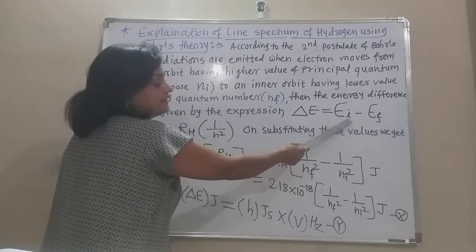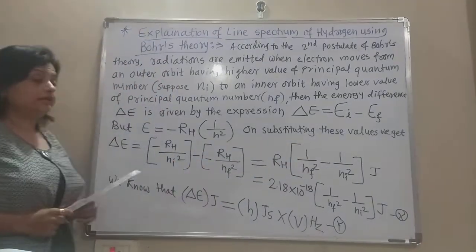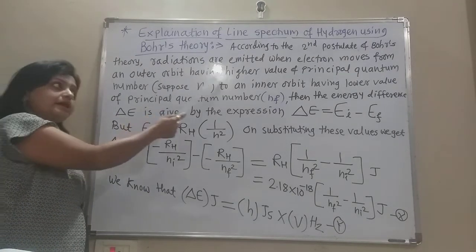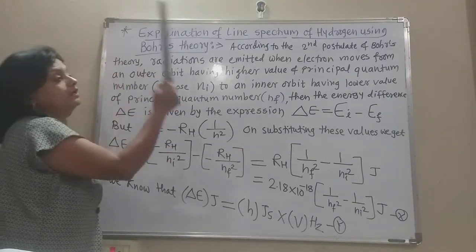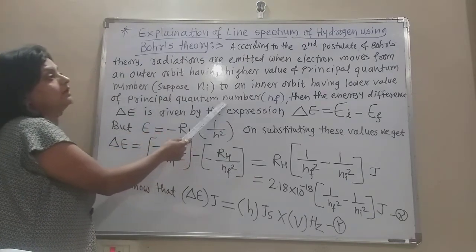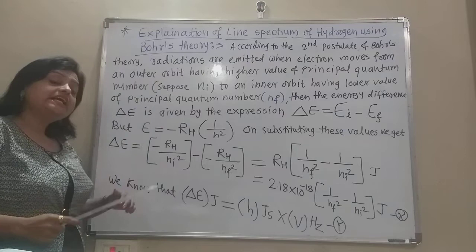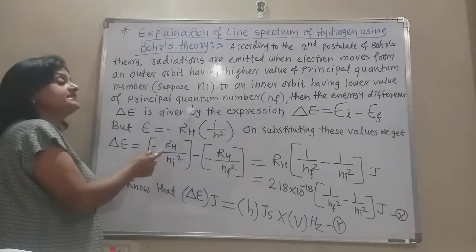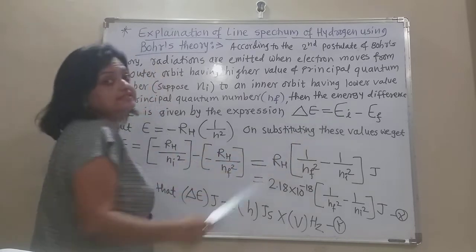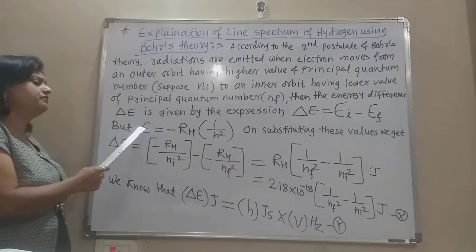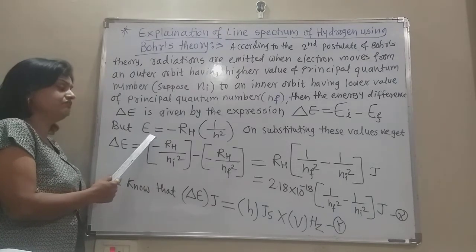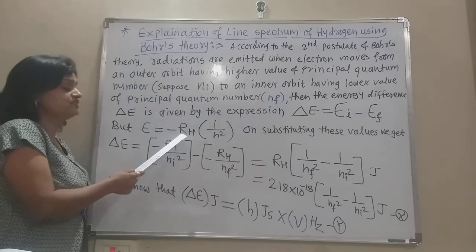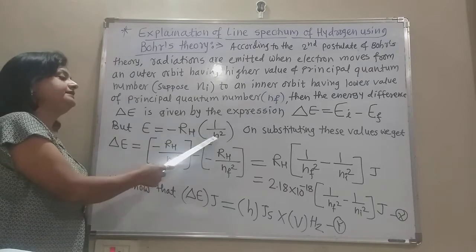When electrons move from the outer orbit of higher principal quantum number to the inner orbit of lower principal quantum number, radiations are emitted that are shown in the emission spectrum. The energy difference delta E equals Ei minus Ef. We know that energy is given in joules by the equation E equals minus RH times 1 divided by N squared, where RH is the Rydberg constant for hydrogen and N is the principal quantum number.